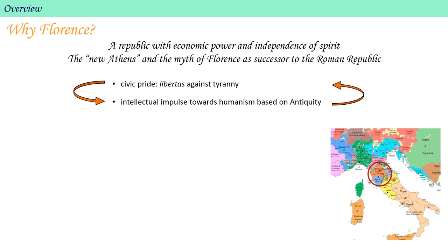But why did the Renaissance start specifically in Florence? To start to answer that complex question, we should remember that Florence is not a duchy, but rather a republic with economic power and independence of spirit. The Florentines saw their city as the New Athens and developed a myth that Florence was the successor to the ancient Roman Republic — two analogies that hearken back to classical antiquity. The Florentines had a unique sense of civic pride, a sense of libertas, or liberty, against oppressive tyrannies. This civic pride nourished, and was in turn nourished by, an intellectual impulse towards humanism based on the model of antiquity, since the antique cultures promoted the endeavors, the worth, and the unique ingenuity of human beings, rather than allowing religious dogma to limit their intellectual scope or spirituality to limit their pursuit of earthly pleasures.